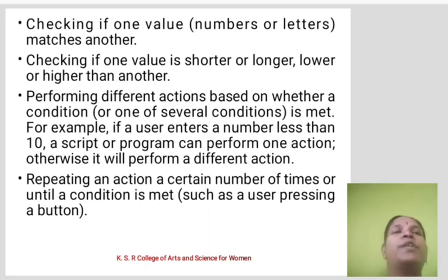Performing different actions based on whether a condition is met. For example, if a user enters a number less than 10, a script or program can perform one action. Otherwise, it performs a different action. Repeating a function a certain number of times or until a condition is met, such as a user pressing a button.